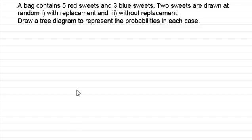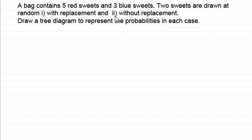Let's start off with a typical question that combines probabilities. We've got a bag that contains five red sweets and three blue sweets. Two sweets are drawn at random. In case one, we do it with replacement, and in part two, we do it without replacement.